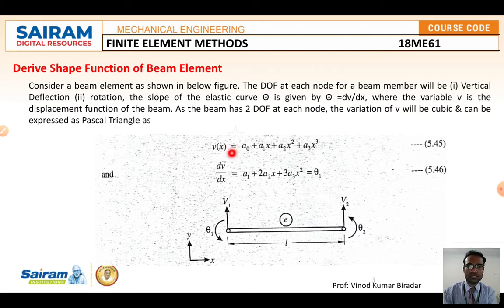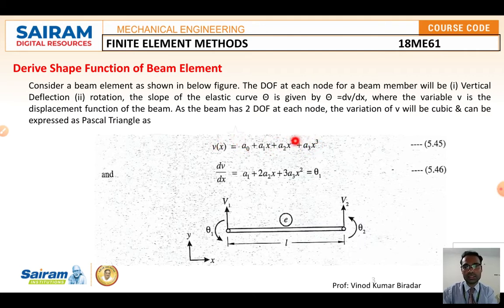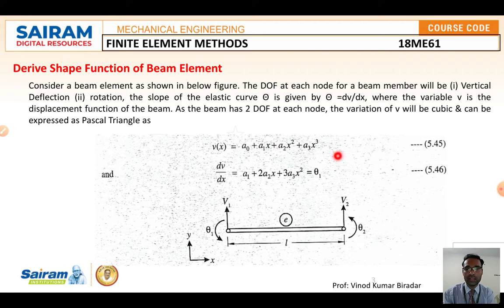The displacement can be expressed using a polynomial function. Since it is a cubic element, we assume: v(x) = a₀ + a₁x + a₂x² + a₃x³ — call this Equation 1. Differentiating with respect to x gives the rotation: dv/dx = a₁ + 2a₂x + 3a₃x² = theta. This is Equation 2.